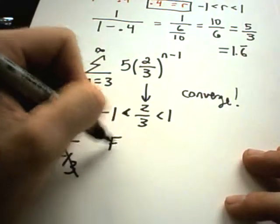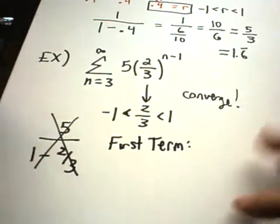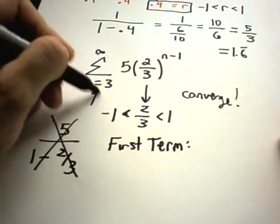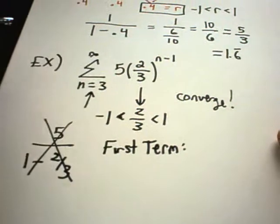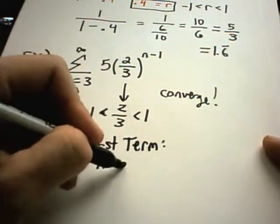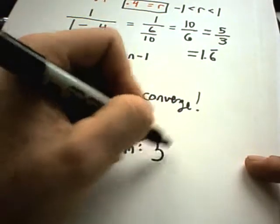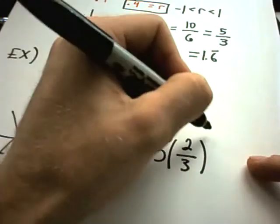Well, what is the first term? The first term is simply going to be the first number that gets spit out when you plug in the first number where your series starts. So in this case, if I plug in n equals 3, I'm going to get 5 times 2 thirds raised to the 3 minus 1.